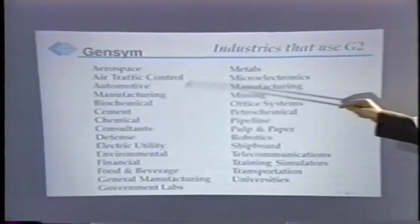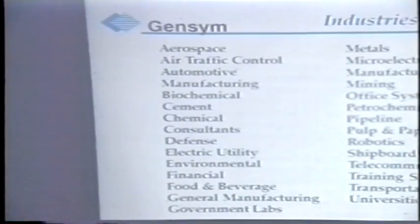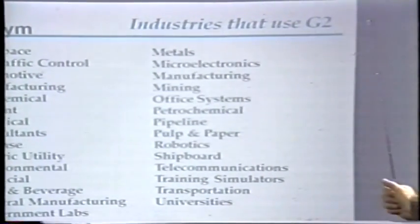Altogether there are many industries that use G2. The unifying aspect of these applications is that G2 is typically used for online applications — 90% of G2 licenses sold are online licenses. They are typically larger applications because G2 is designed to handle large applications in real time.